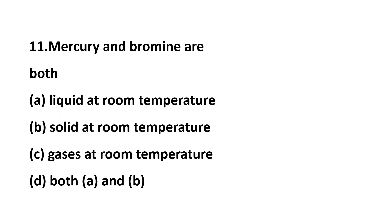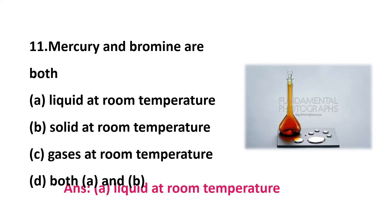Question 11: mercury and bromine are both — option A: liquid at room temperature, option B: solid at room temperature, option C: gases at room temperature, option D: both A and B. You might have seen mercury in a clinical thermometer moving when checking body temperature. So mercury is liquid at room temperature. The answer is option A: liquid at room temperature — mercury and bromine are both liquid at room temperature.